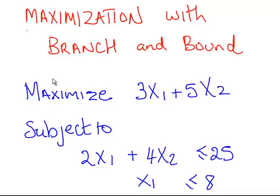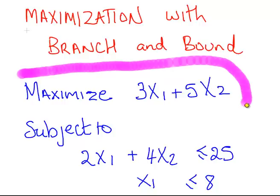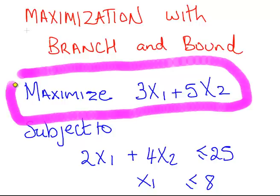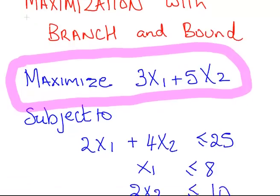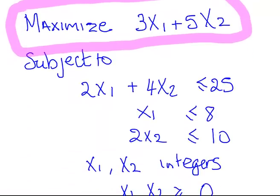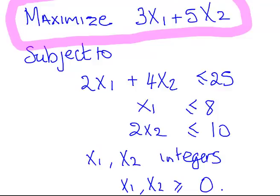In this presentation we're going to look at maximization using the branch and bound technique. This is a quick overview of the tree approach to branch and bound. This is related to integer programming. What we're going to do here is maximize this objective function here.